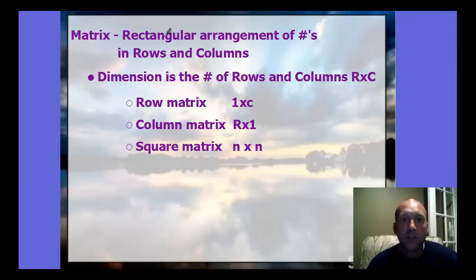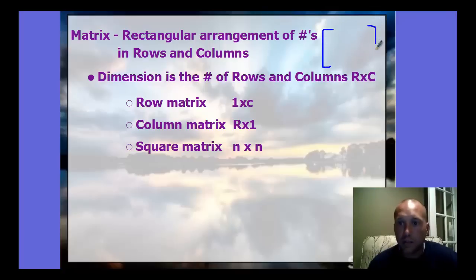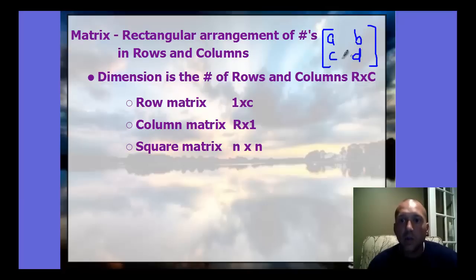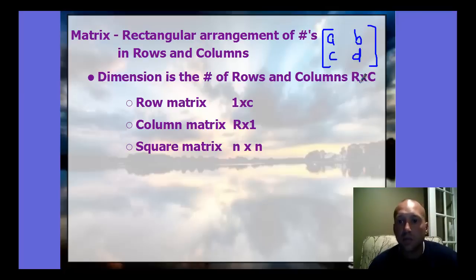A matrix is a rectangular arrangement of numbers in rows and columns. We put them inside brackets. An example with variables A, B, C, D would be a matrix. The dimension is the number of rows and columns, expressed as R by C — rows first, then columns.